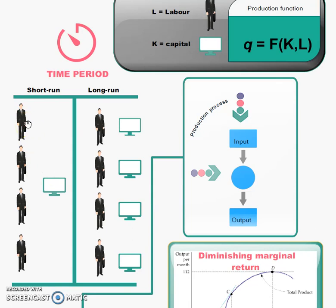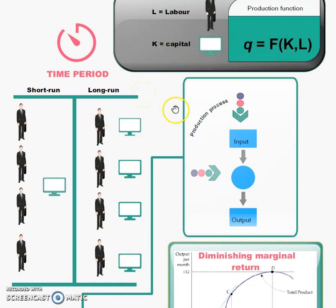For example, if you look at a bakery, you can hire more and more bakers, but you only have one oven or one building, which represents the capital. You can't expand that immediately — it needs time to do that. So the number of workers can change easily within the short run, but the capital is fixed. In the long run, both of these inputs are variable, so you can use any combination of labor and capital to produce a certain output. This whole process is called the production process.